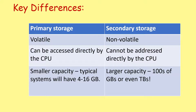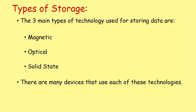If we take a moment just to compare and contrast your primary and your secondary storage: your primary storage or main memory is volatile, whereas secondary storage is non-volatile. Primary storage can be accessed directly by the CPU, whereas secondary storage cannot be addressed directly by the CPU. Primary storage is a bit smaller — it typically has a capacity between 4 and 16 gigabytes — whereas secondary storage can have hundreds of gigabytes or even many terabytes of storage relatively cheaply.